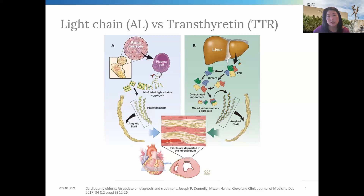Transthyretin is actually a transport protein for thyroxin and retinol. It's a precursor protein produced by the liver, and it's normally in a tetramer conformation. But what can happen is these tetramers can disband into monomers, and it's these monomers which can then misfold into amyloid fibrils, which can then deposit into organs and cause damage. This can occur either spontaneously, as seen in the wild type TTR, or can be related to an inherited gene mutation, which we see in the hereditary type.